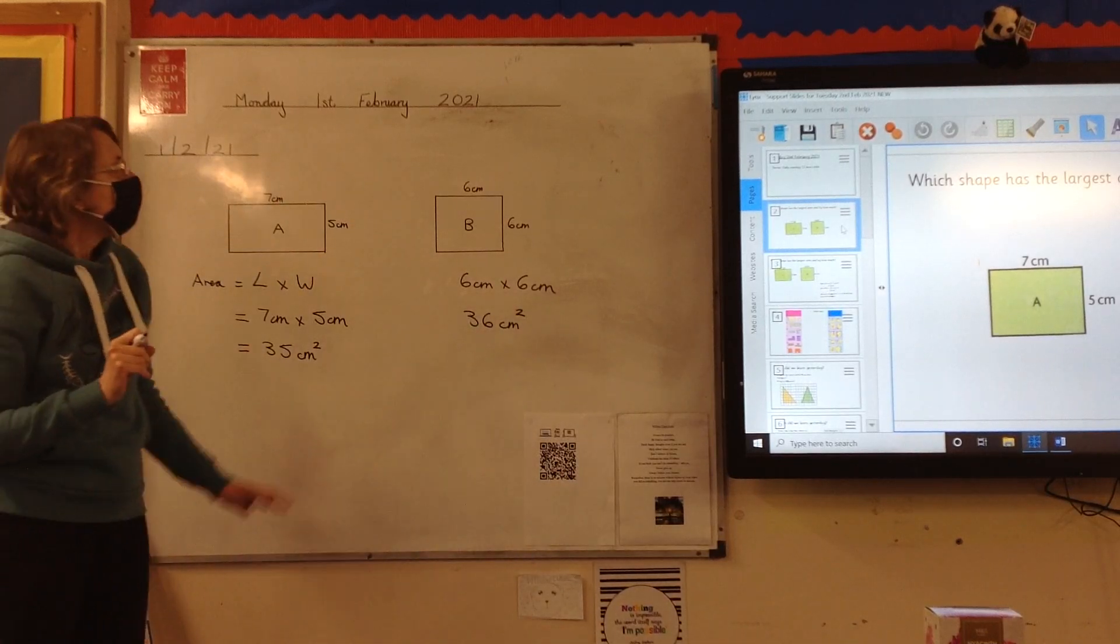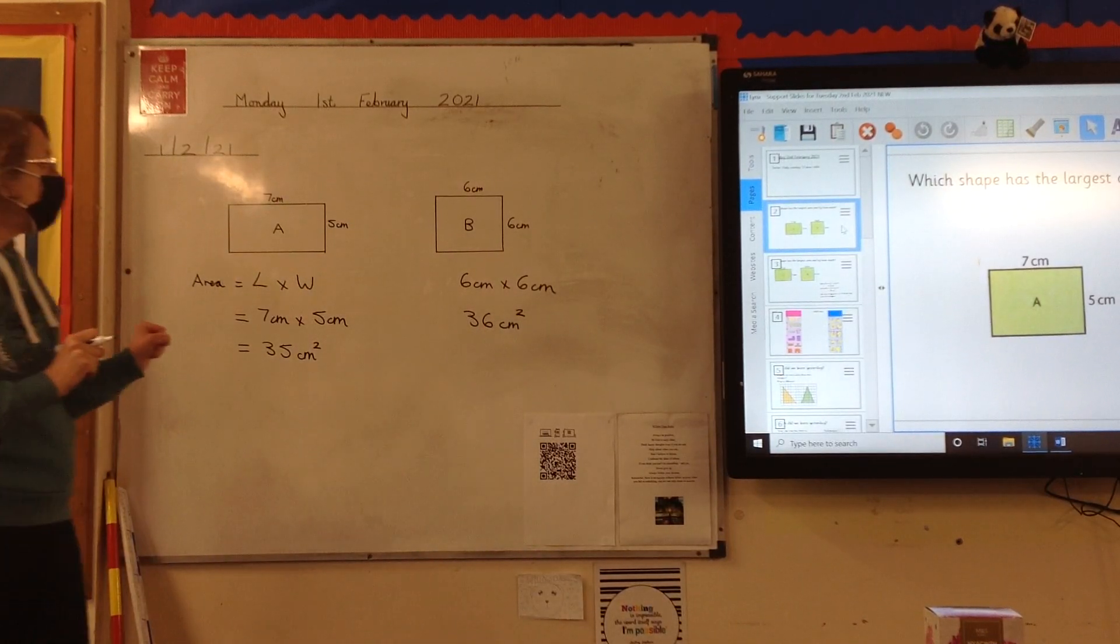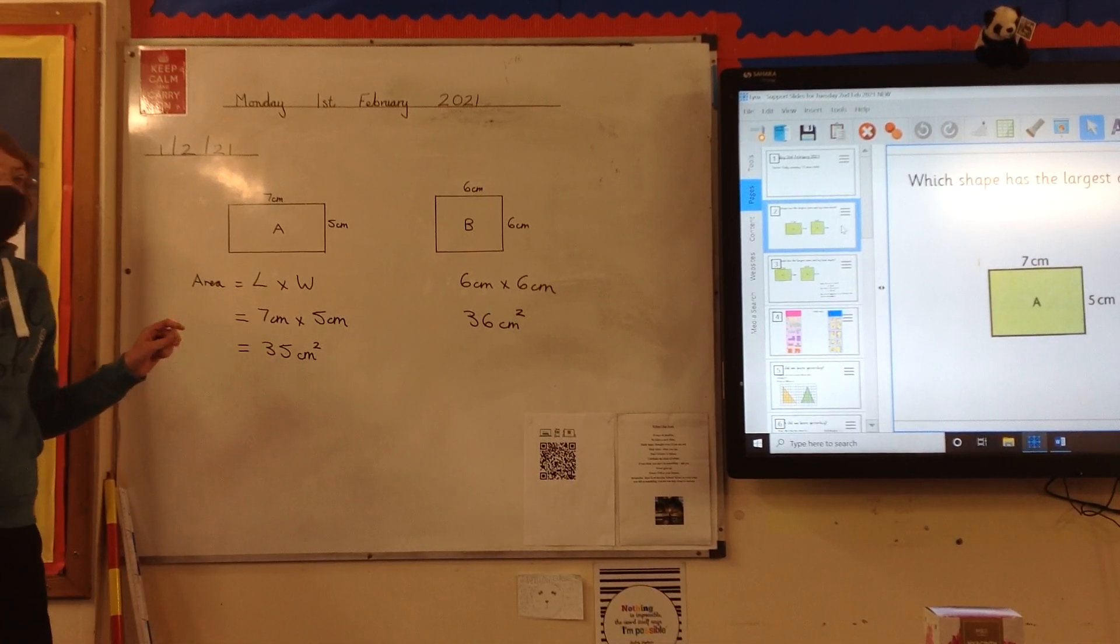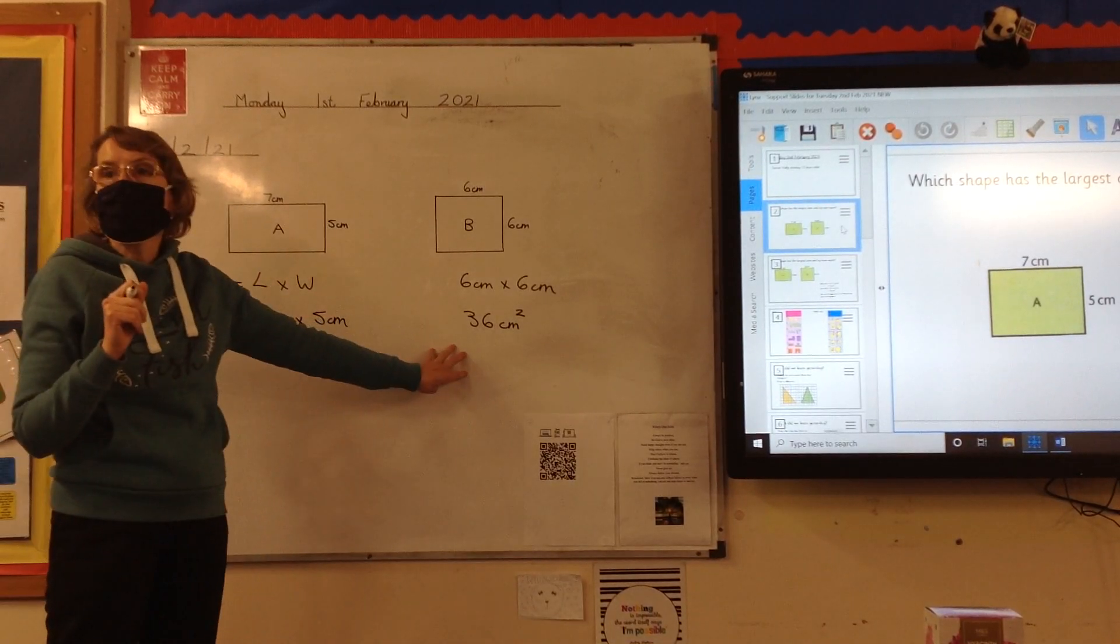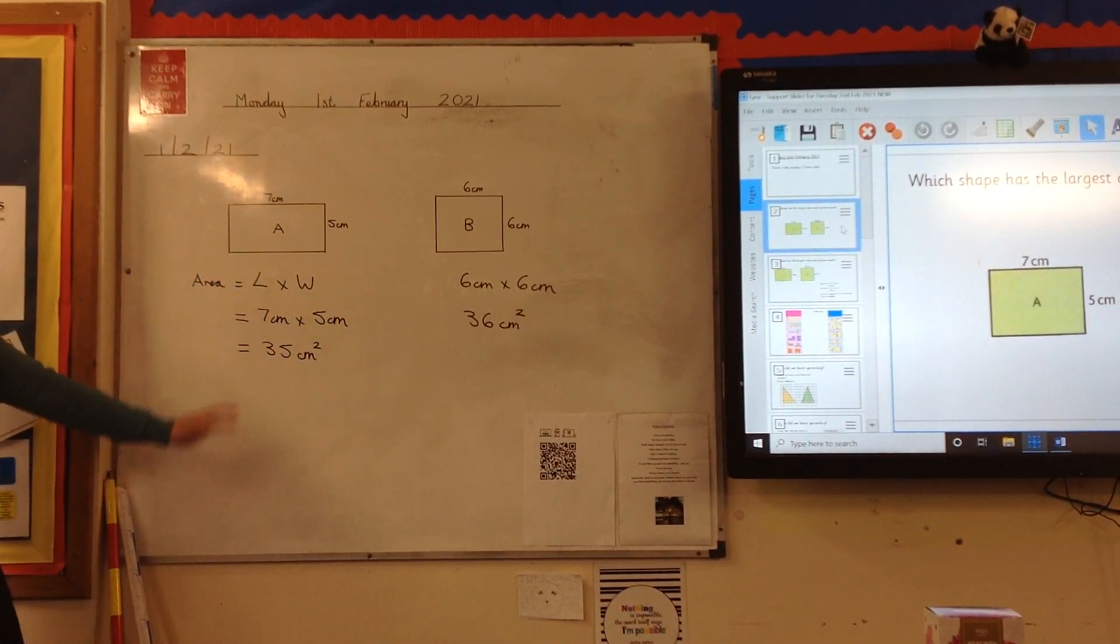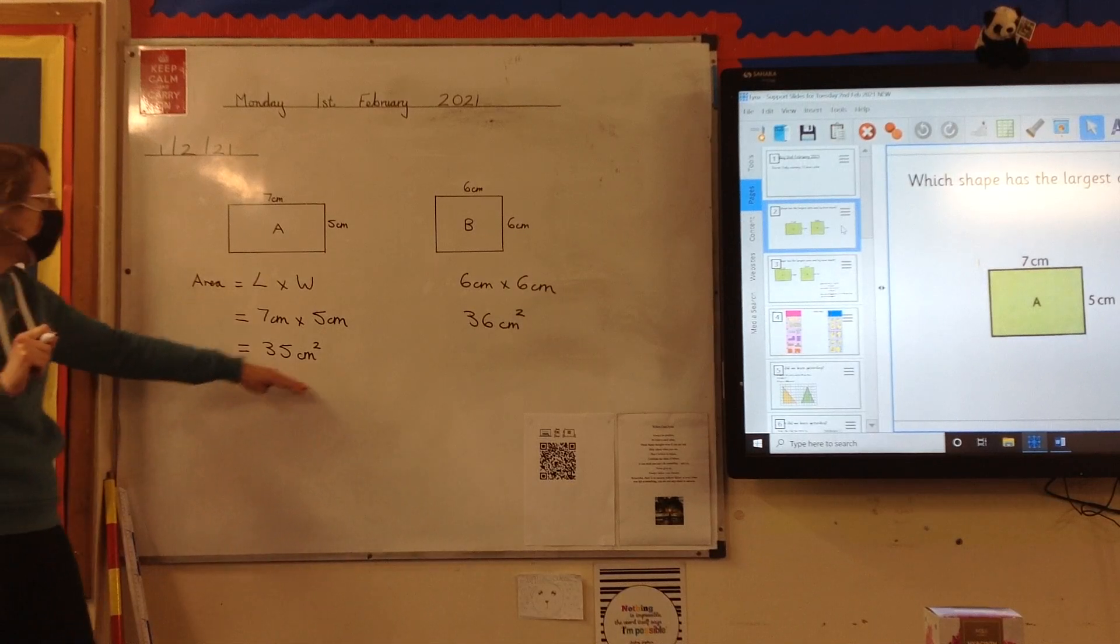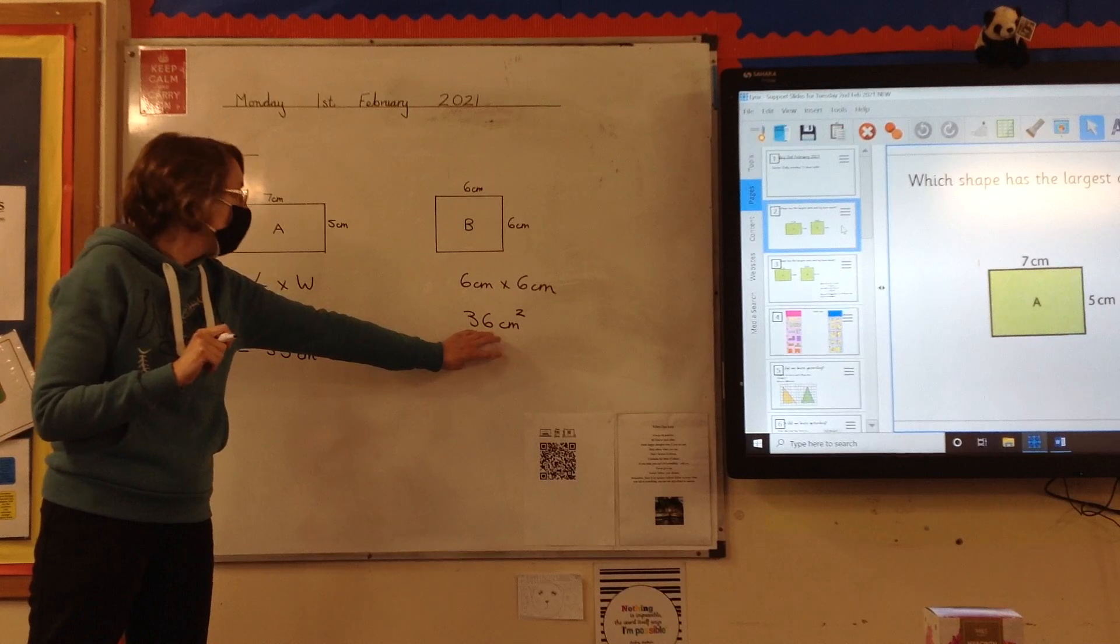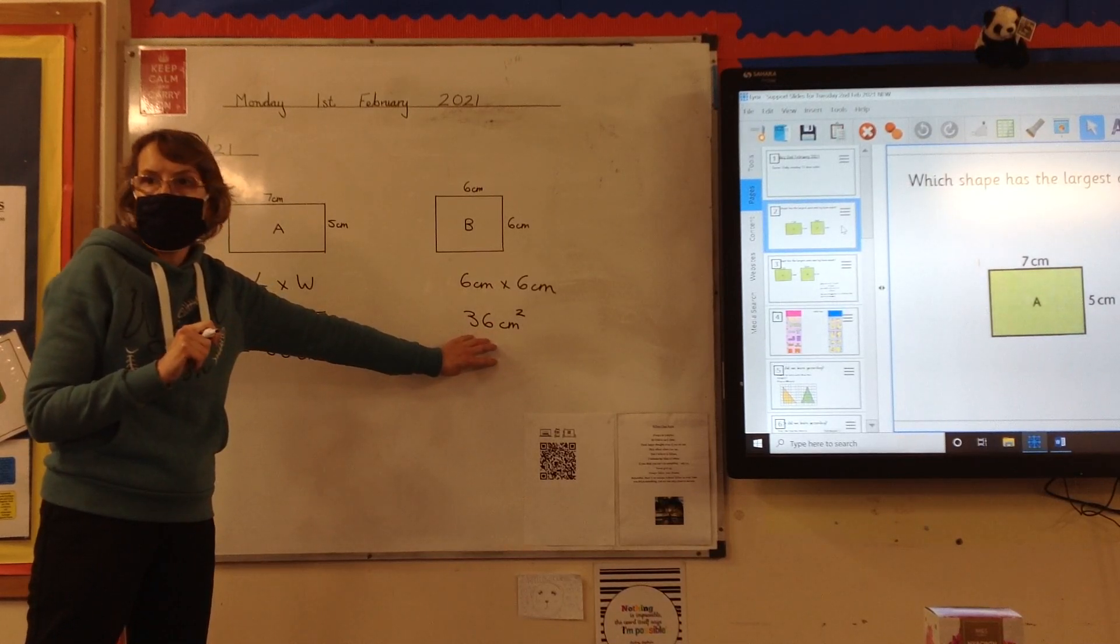The question says, which shape has the largest area and by how much? Which one has got the largest area? B. And by how much? One centimetre. Yeah. There's not much in it, is there? That's 35, that's 36. So that is the larger by 1 centimetre.